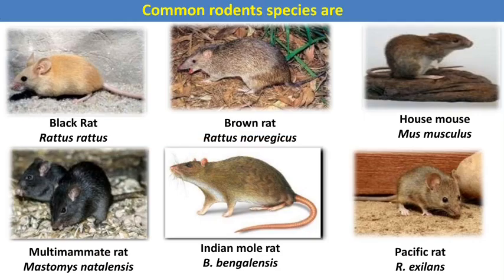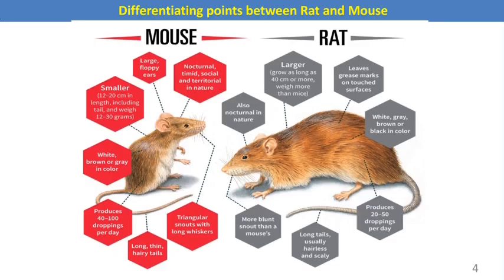About 5 species of rats mostly infest field crops as well as other crops. These are the black rat, brown rat, house mouse, multimammate rat, Indian mole rat, and the bandicoot rat — the most common species of rodents that damage our crops.